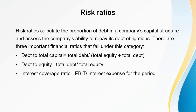Next, let's look at risk ratios. Companies have two kinds of capital: equity, which is the investment made by shareholders, and debt, which is the loans taken from banks. Shareholders closely monitor a company's debt because high debt increases the chances of default. It also means the company has to pay high interest, which eats into dividends and retained earnings. Risk ratios calculate the proportion of debt in a company's capital structure and assess the company's ability to repay its debt obligations.